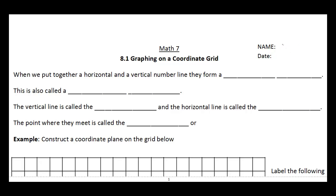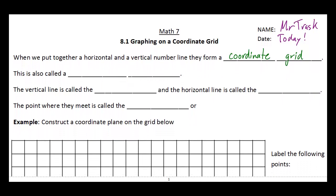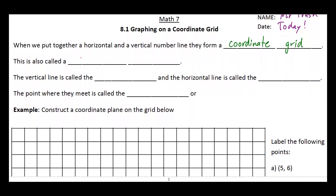Welcome to lesson 8.1. Today's lesson is all about graphing and how to place points on a coordinate grid. If you take a horizontal and vertical number line and put them together, they make something called a coordinate grid — the typical graph paper grid you're used to seeing. This is also called a Cartesian plane, named after the famous French philosopher and mathematician René Descartes.